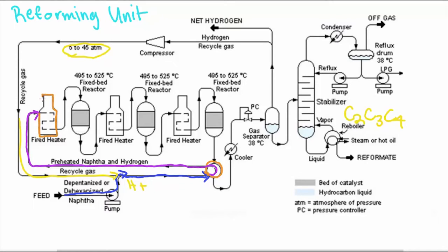There are three furnaces to control the temperature of 495 degrees Celsius to 525 degrees Celsius throughout the reaction. This is because the reaction is highly endothermic, which means that it absorbs heat or loses heat while the reaction takes place.